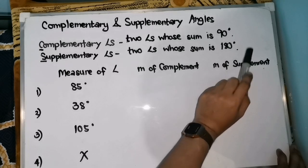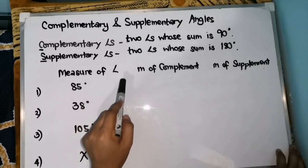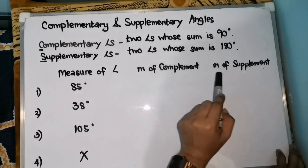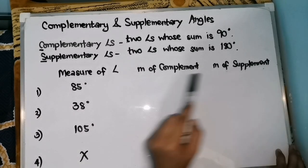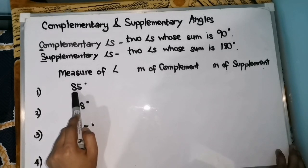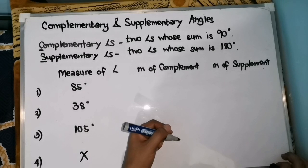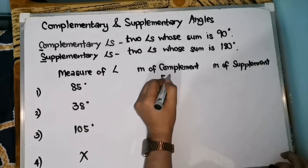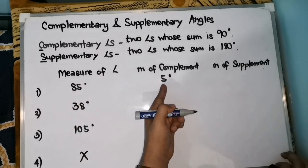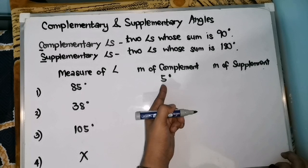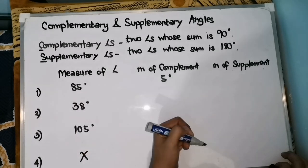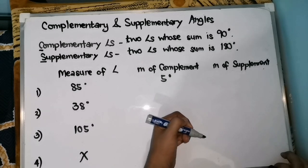Let's have an example. We have given measures of angles, items 1 to 4. We will find the measure of its complement and the measure of its supplement. For number 1: 85 degrees. What is the measure of its complement? Therefore, 90 minus 85 equals 5 degrees. When we add 85 and 5, that is 90. So, 85 degrees and 5 degrees are complementary angles — that's how easy it is.